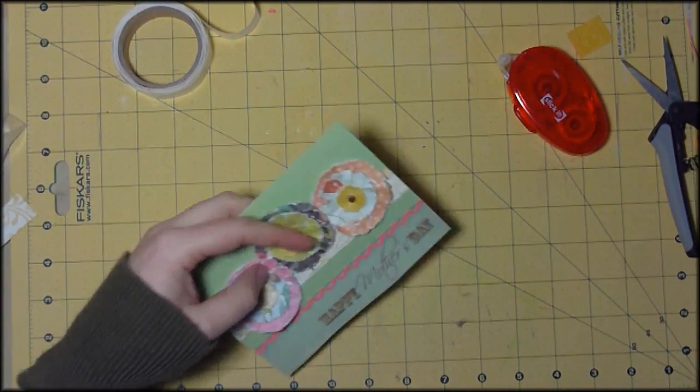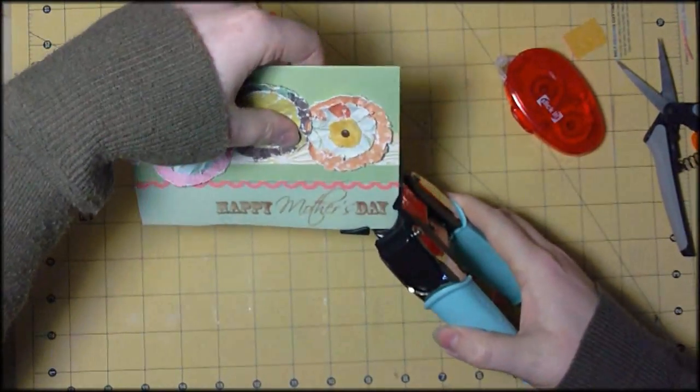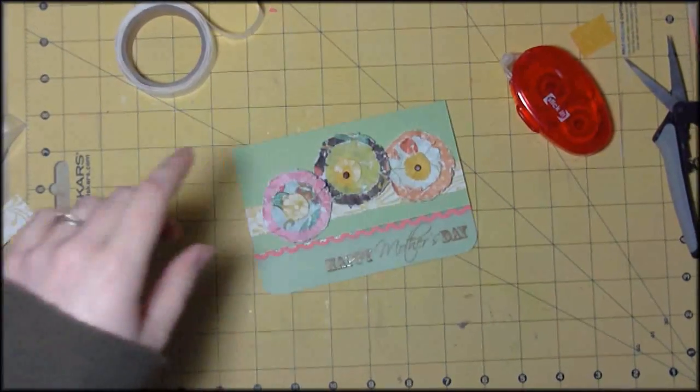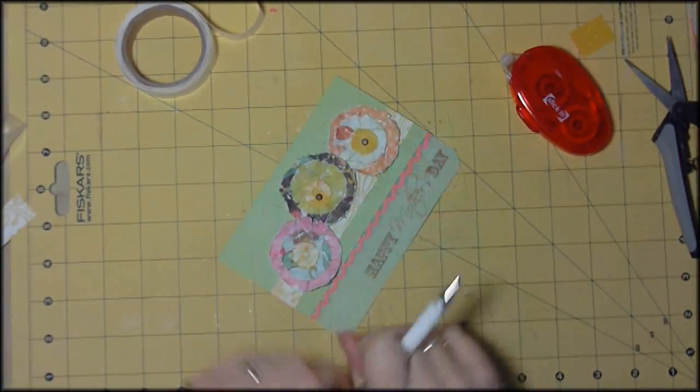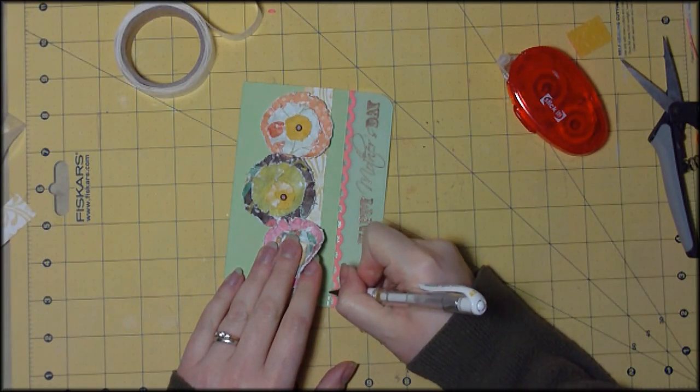And now I just got to punch the corners just around those bottom two corners of the card. And then I thought I was done but then I decided to put a bit of faux stitching in just along that border line.